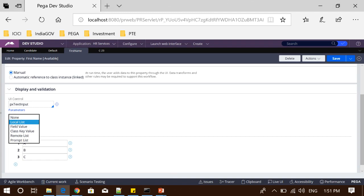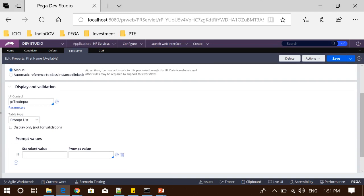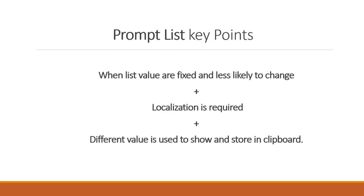Instead, it should be promoted to use prompt list if we want to achieve localization. Coming back to the same property rule form, I want to configure with the second option, prompt list. If we want to use localization we should be using prompt list. It is very similar to local list but there is a difference. The purpose is again to use when the values are fixed and less likely to change, plus it supports localization. The localization wizard can actually create field value rules which put in the standard value and will be used for localized text conversion.